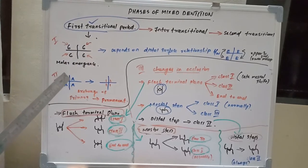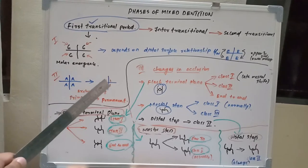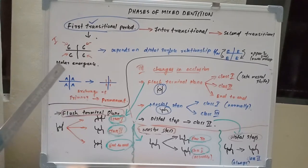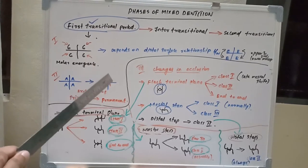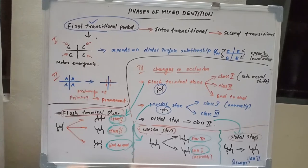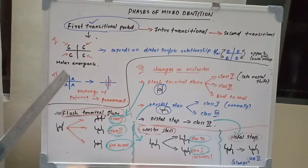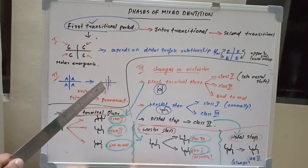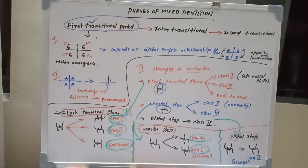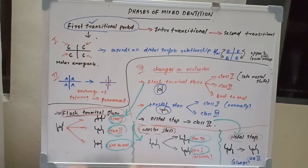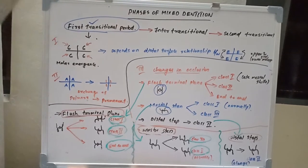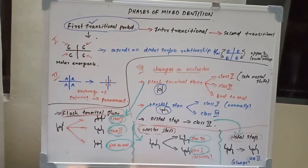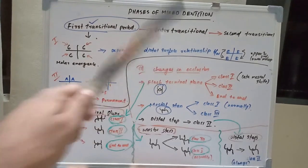The second thing that happens during the first transitional period is the exchange of primary incisors with permanent incisors. Here 'A' represents the primary incisors and '1' represents the permanent incisors. So the primary incisors are replaced by permanent incisors.